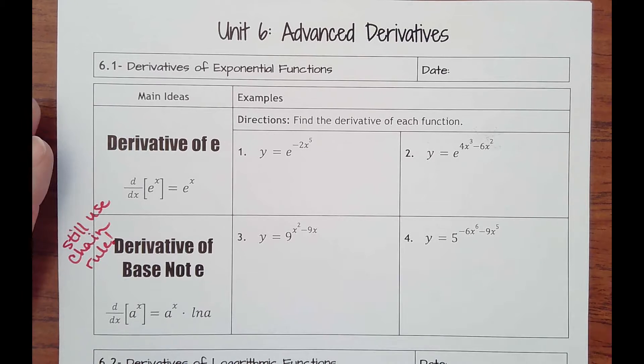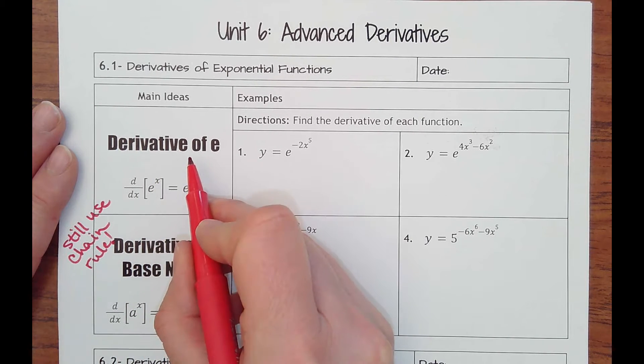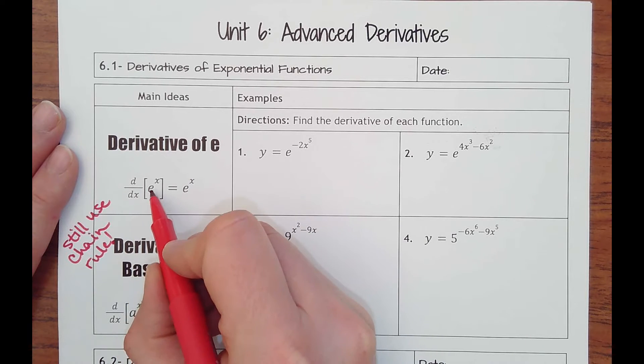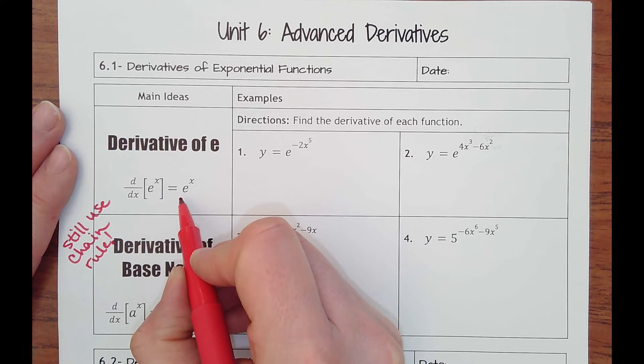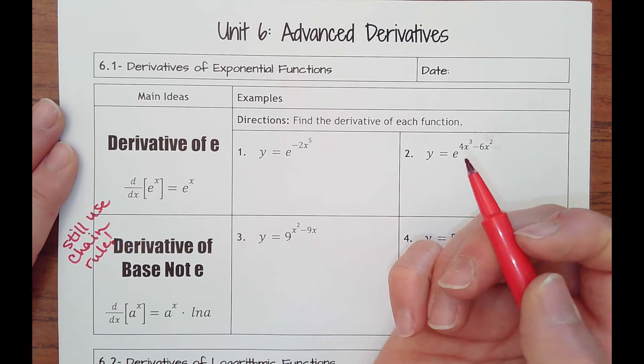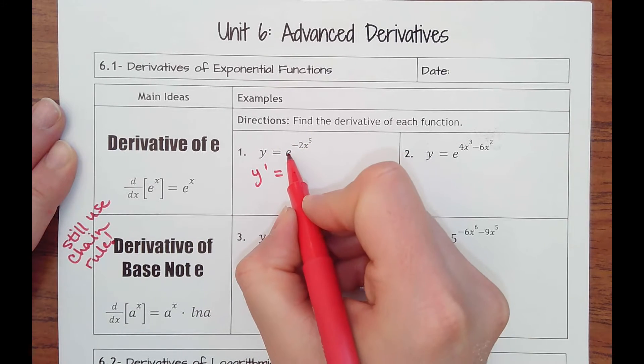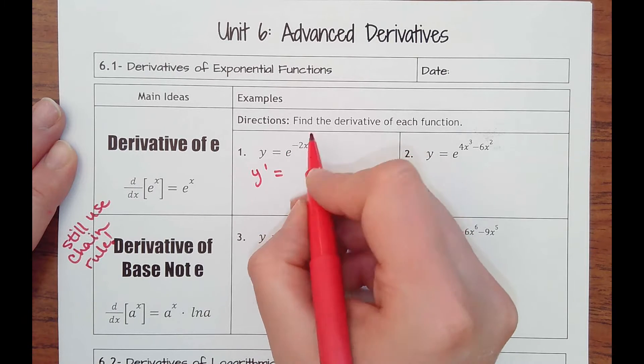Really it starts out pretty simple because what's nice about when you take the derivative of e, so e to a power, the derivative of that is actually itself. And so I wrote a little note here: still remember that you have to use the chain rule. So if I were to find the derivative of this function y prime, I'm going to have the derivative of e being itself.